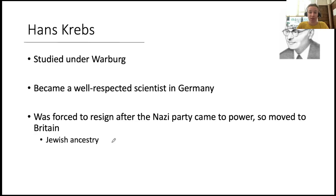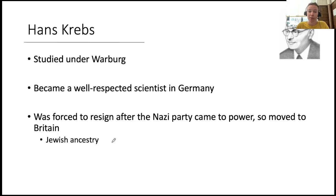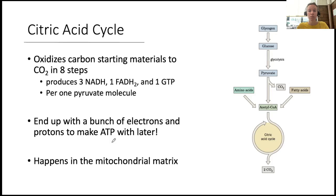Our meet-a-scientist moment is Hans Krebs, after whom the Krebs cycle — or citric acid cycle or TCA — is named. He studied under Otto Warburg, whom we learned about previously. He was a well-respected scientist in Germany, but was forced to resign and moved to Britain to do his work because he is of Jewish ancestry and it was no longer safe for him to live in Germany when the Nazi party came to power.